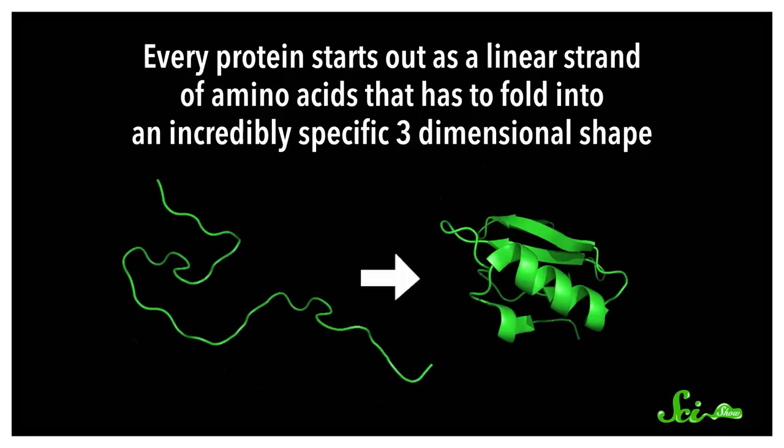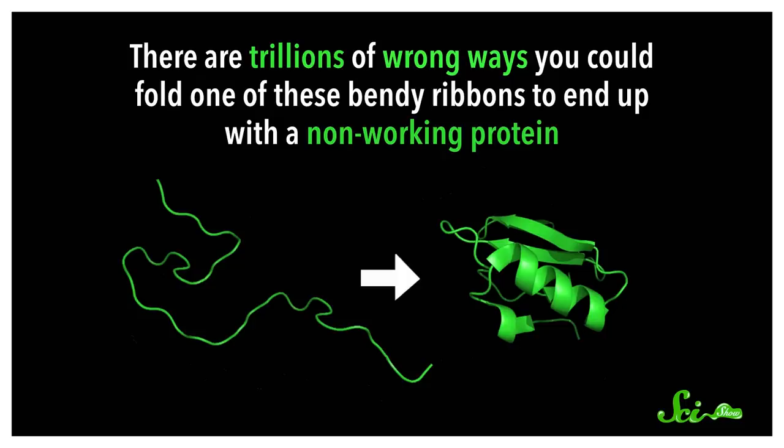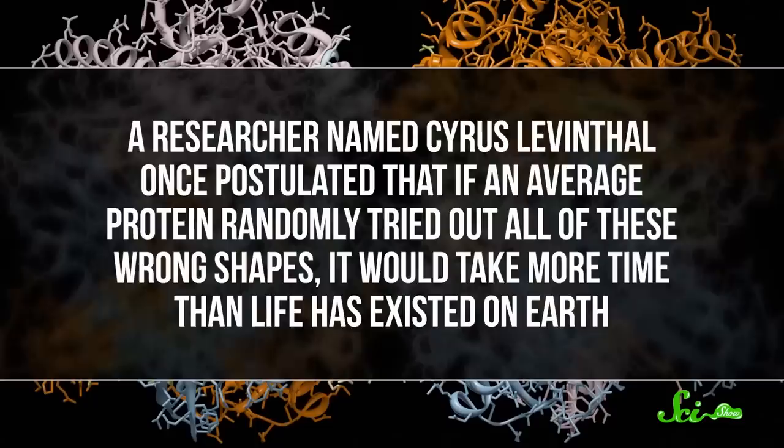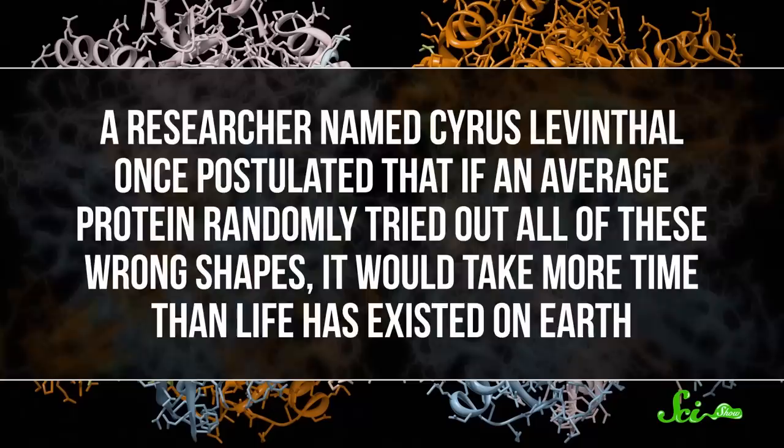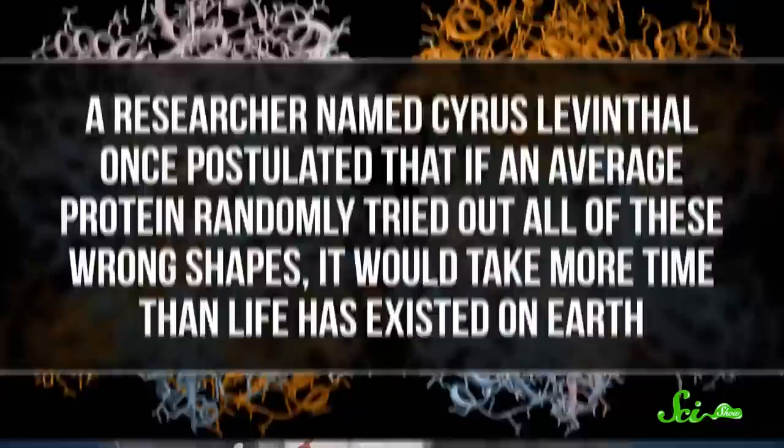Or it should be. Every protein starts out as a linear strand of amino acids that has to fold into an incredibly specific three-dimensional shape. And there are trillions of wrong ways you could fold one of these bendy ribbons to end up with a non-working protein. A researcher named Cyrus Leventhal once postulated that if an average protein randomly tried out all of these wrong shapes, it would take more time than life has existed on Earth. We're pretty sure they managed to fold correctly somewhat faster than that.